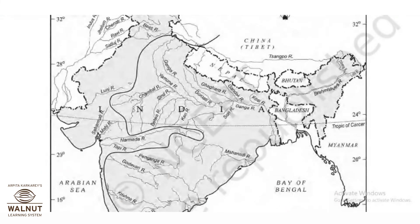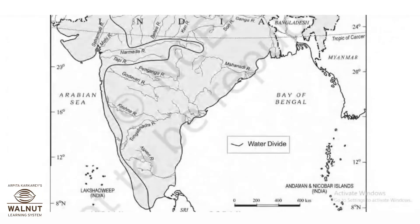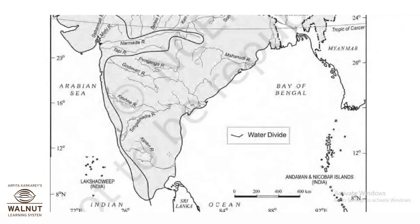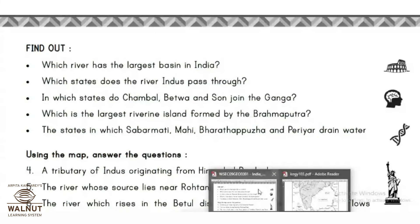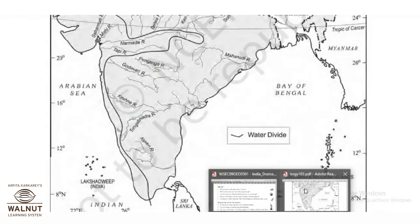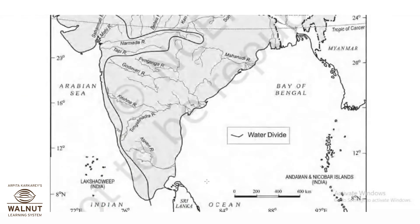Mahi starts from Gujarat, flows through Madhya Pradesh, and drains into the Arabian Sea. Bharatpuzha originates in Tamil Nadu and drains Tamil Nadu and Kerala, meeting the Arabian Sea. Periyar is the most important river in Kerala — it drains Tamil Nadu and Kerala. So down south, Kerala and Tamil Nadu are drained by these rivers.